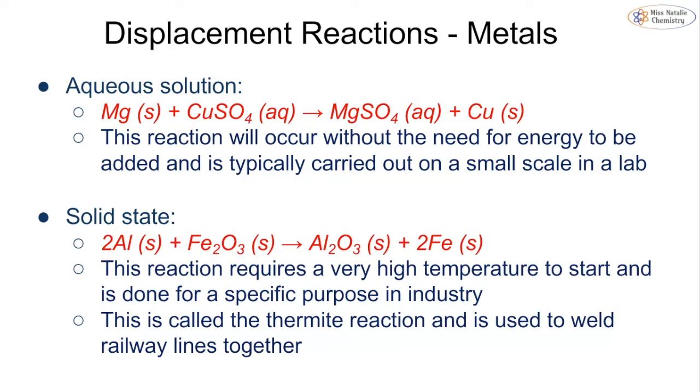When we have an aqueous solution displacement reaction with a metal, we've got magnesium metal reacting with copper sulphate. The magnesium is higher on the reactivity series than copper, meaning it is more reactive. In a displacement reaction, the more reactive metal takes the place of the less reactive metal. So we get magnesium sulphate being formed and copper metal. This will happen on a small scale and does not require any energy, so we don't need to heat it or put electricity through. We can simply leave the magnesium and copper sulphate and the reaction will continue on its own.